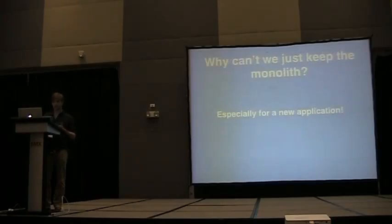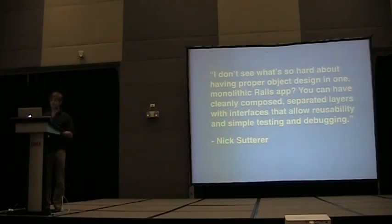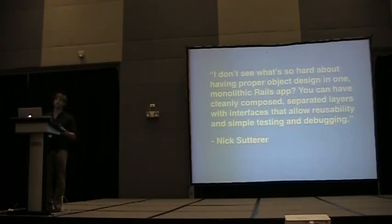So why can't we just keep the monolith? I think this would make a lot more sense and be much easier to manage. Nick Sutter has a really great quote about this: "What's so hard about having proper object design in one monolithic Rails app? You can have cleanly composed separate layers with interfaces that allow reusability, simple testing and debugging." That's something you can do by namespacing your models, creating service objects, or extracting logic into gems to create a nice, maintainable single monolithic app.